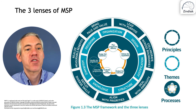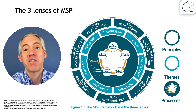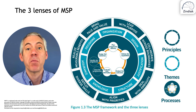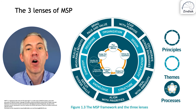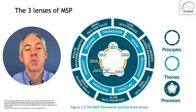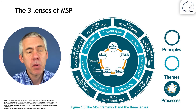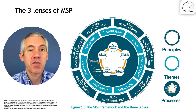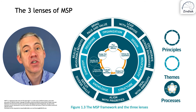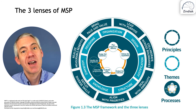MSP views programs through three lenses, which are also the key areas of the exam. This lesson covers key concepts — 5 marks out of 60 — but the other 55 marks come from these three lenses: the seven principles, the seven themes, and the seven processes. By far the greatest proportion of the exam — over 50% — is focused on the themes. In the course we will cover the principles first, then introduce the themes, then cover the processes in detail, and then cover the themes in detail.